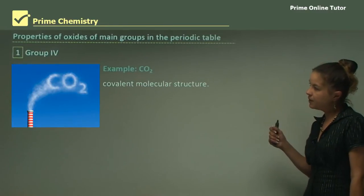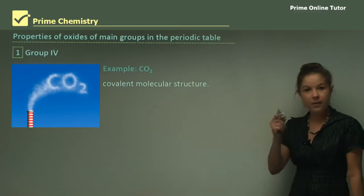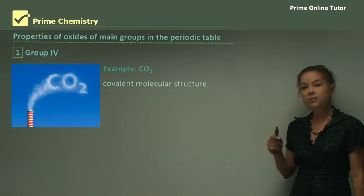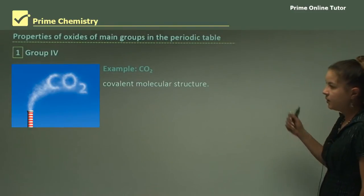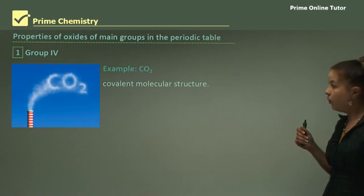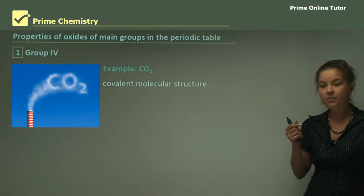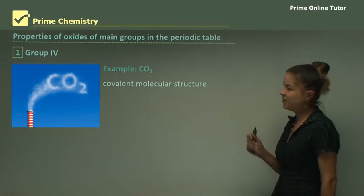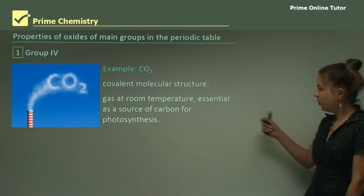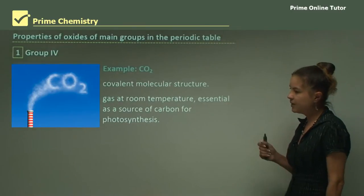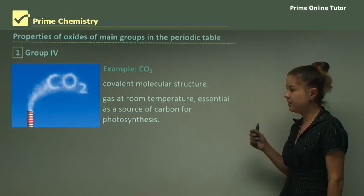Now looking at the properties of oxides of main groups, I'm going to describe a few of the groups in the periodic table and a few of the oxides and how they react. For Group 4, our example is carbon dioxide, CO2. It has a covalent molecular structure because it's a non-metal. It's a gas at room temperature and it's essential as a source of carbon for photosynthesis by plants and trees.